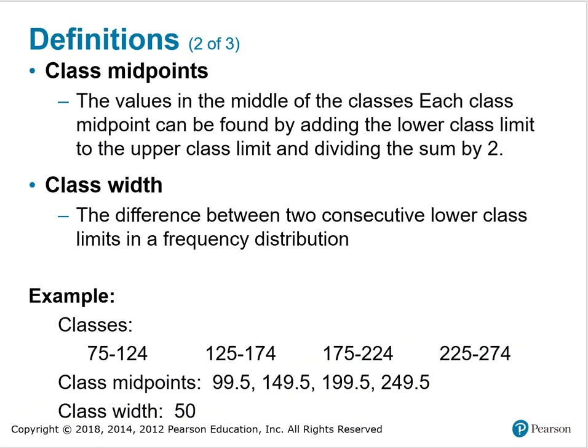Class midpoints are the values in the middle of the classes. Each class midpoint can be found by adding the lower class limit to the upper class limit and dividing the sum by 2. The class width is the difference between two consecutive lower class limits in a frequency distribution.